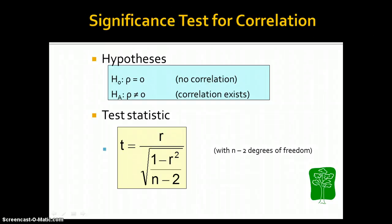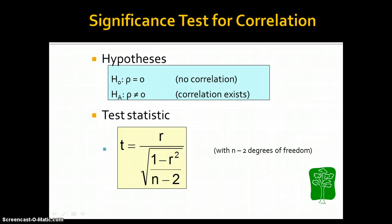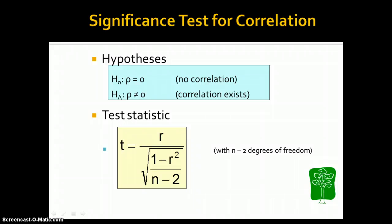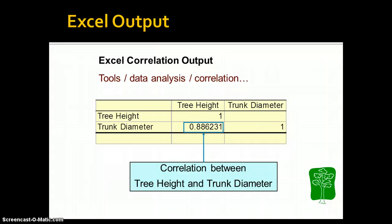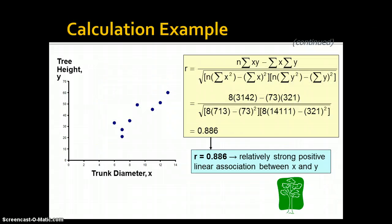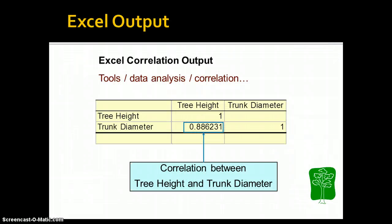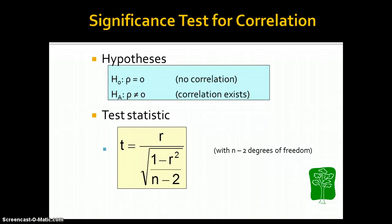Alex here talking about correlation and regression. In the first part of the screencast series we talked about correlation — some ways to visualize it using scatter plots, what it looks like when we calculate it, what the test statistics and R coefficients mean — when we were calculating the association between tree height and trunk diameter. Then we stopped when we started talking about significance testing for correlation.